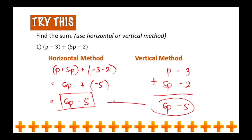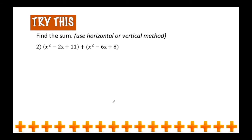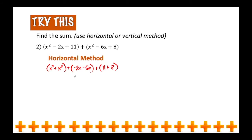Let's have another example. We're going to add the quantity of x squared minus 2x plus 11 and x squared minus 6x plus 8. Using the horizontal method, we are going to group like terms in a parenthesis. So group x squared with the other x squared, plus group negative 2x and negative 6x, and then lastly group the constant terms.